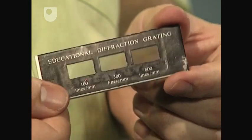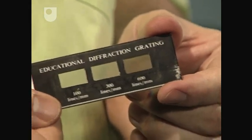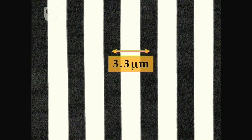The first one I'll be using has 300 lines per millimeter. That's like 300 apertures packed into every millimeter across it. So the spacing between the individual lines is one three hundredth of a millimeter or about 3.3 microns.